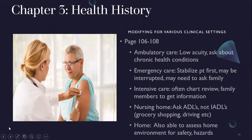Modifying for various clinical settings: ambulatory care is the best setting — patients are low acuity, you can ask about chronic health conditions, they're generally alert and cooperative. In the emergency room you may need to stabilize the patient first before gathering history, you may be interrupted, and you may need to ask family or look at the chart. In the ICU you're generally getting information from chart review and family members since most patients are sedated or on ventilators.